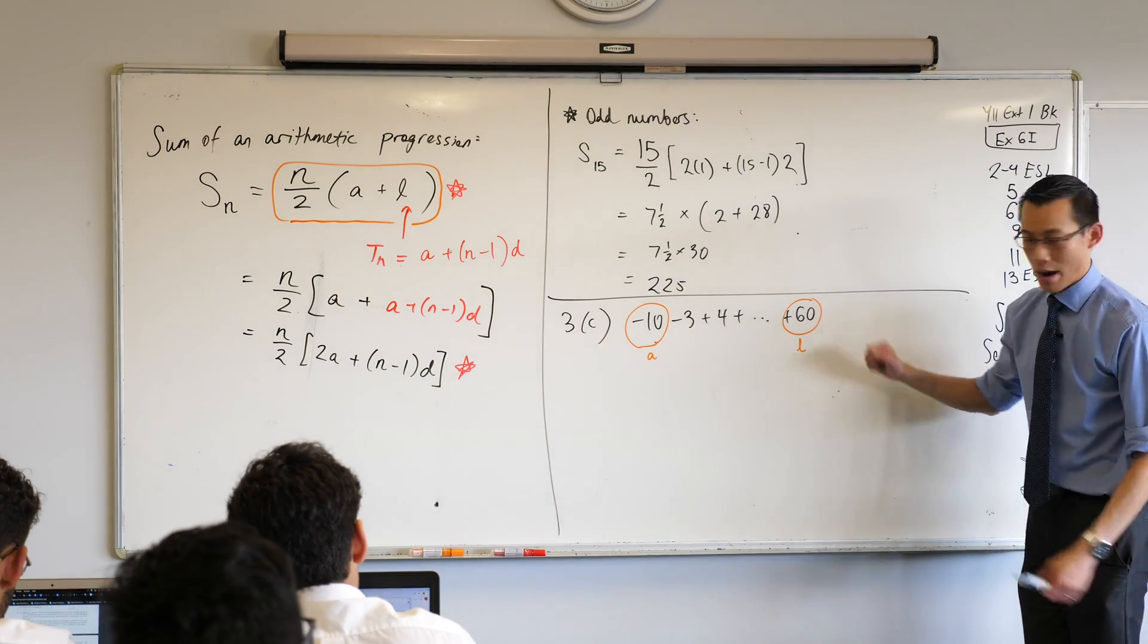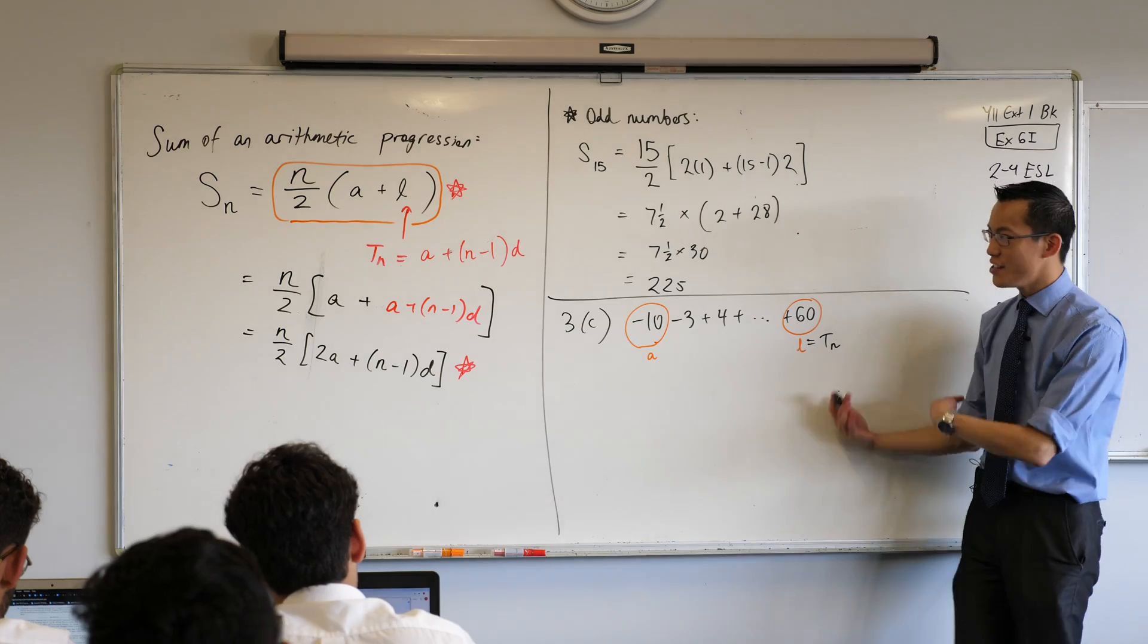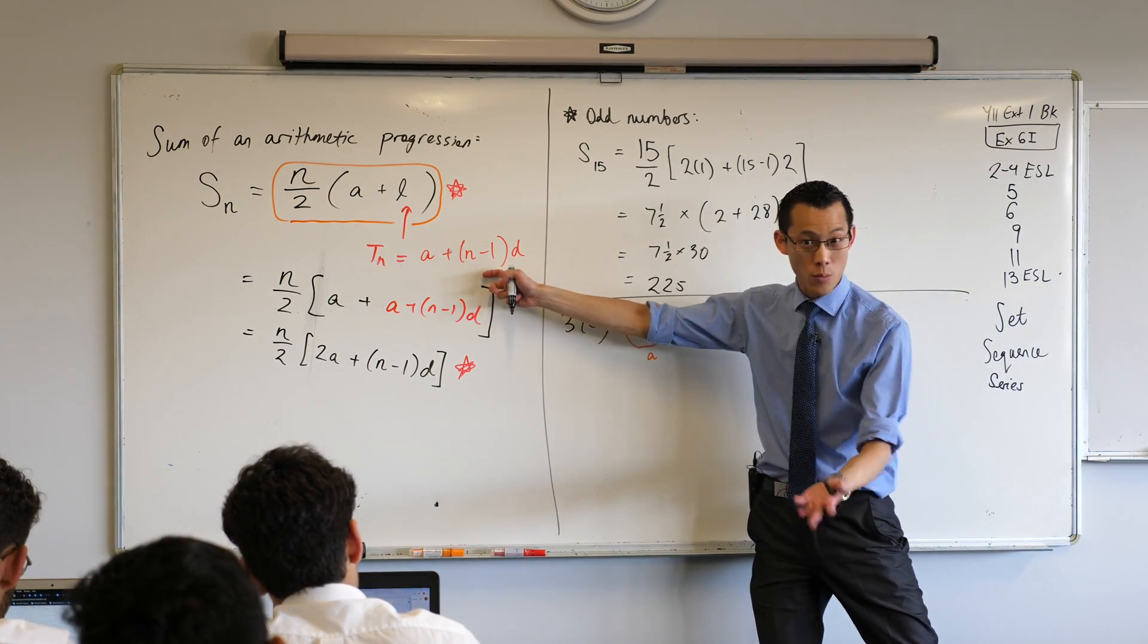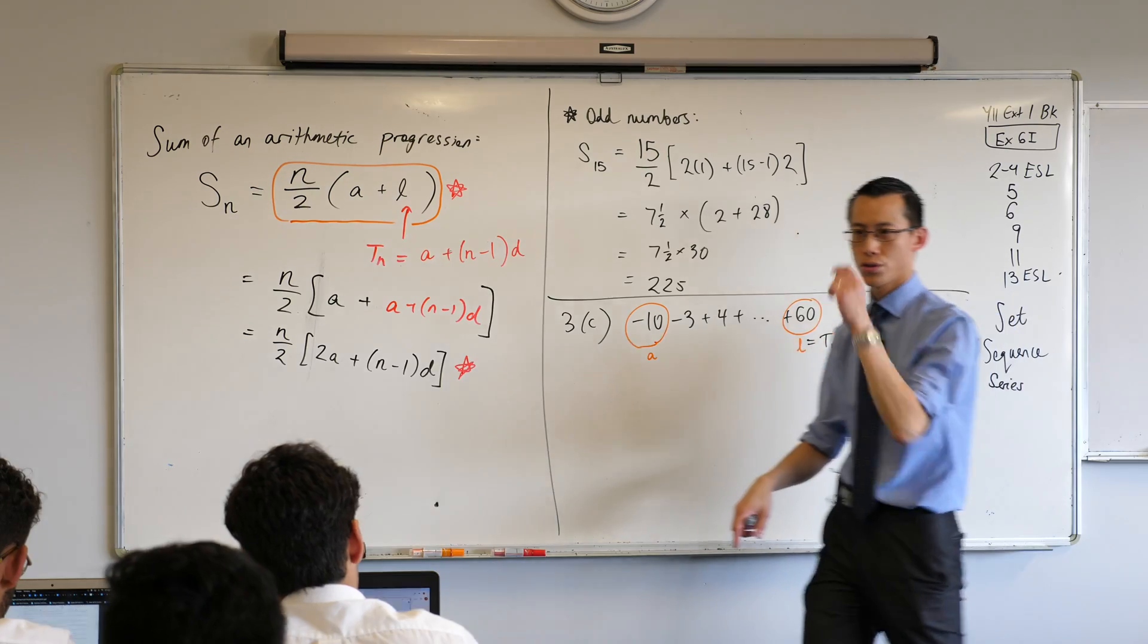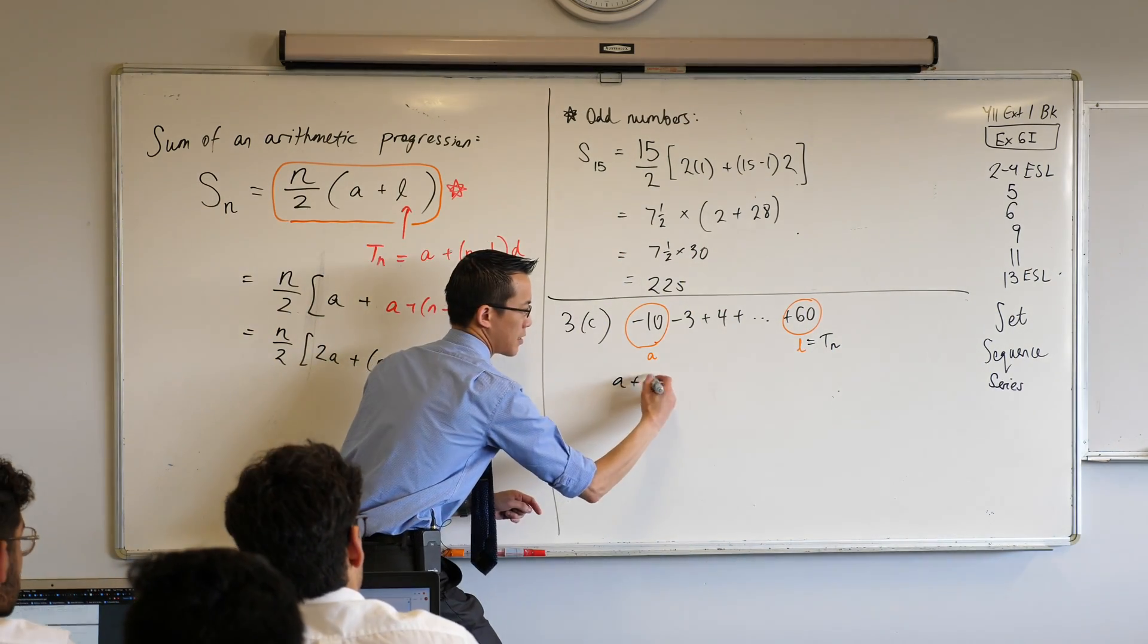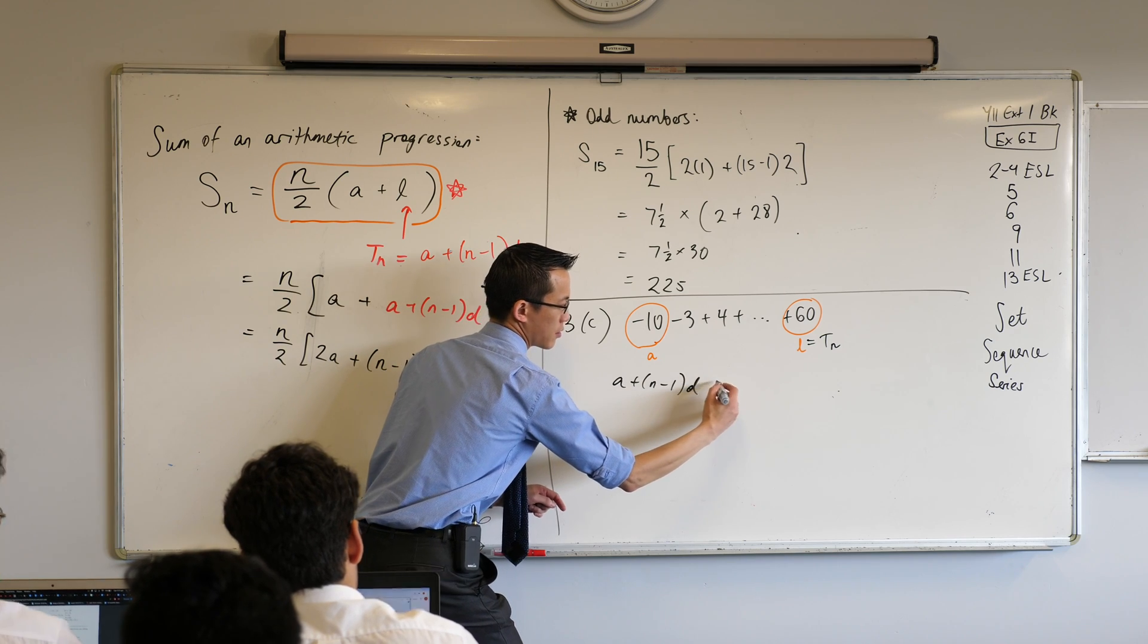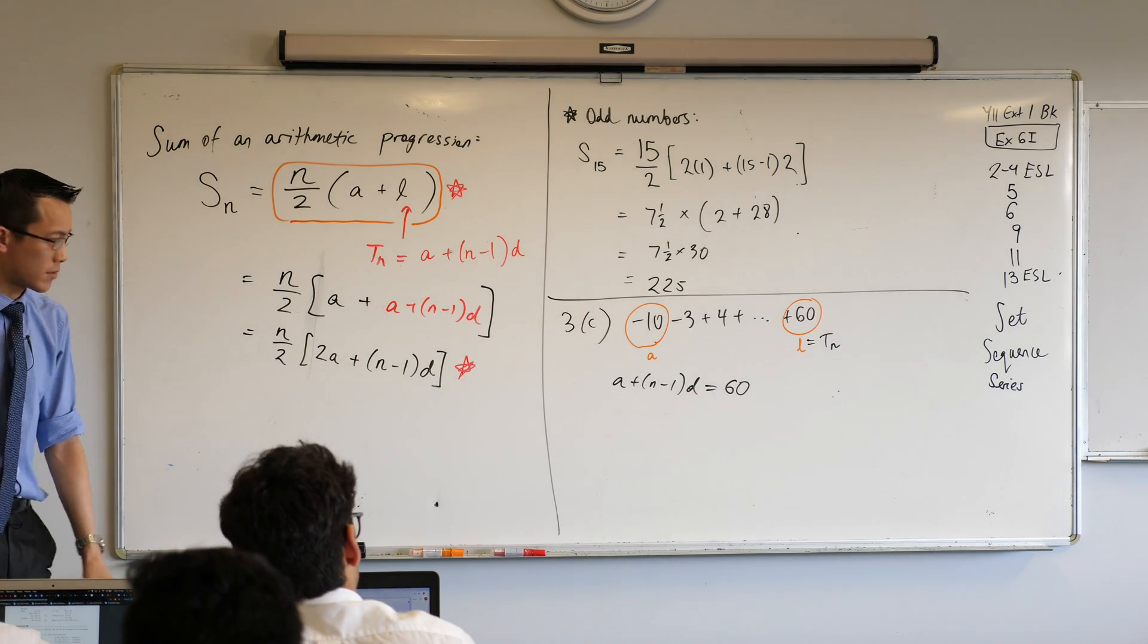We're going to look at this l, right? This is the same as the nth term. And I can use this formula that we've already worked with to work out how many terms there are. Watch. Term n equals this, a plus n minus 1, lots of the common difference, and that's what I'm supposed to end on.